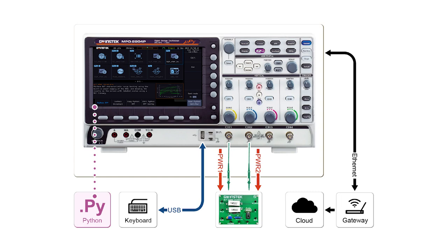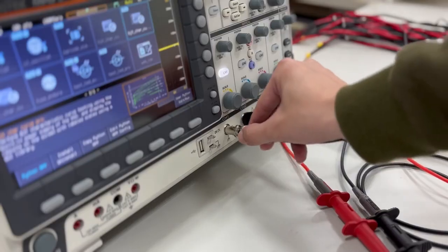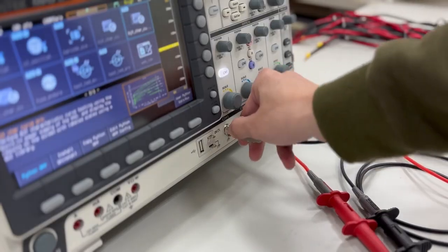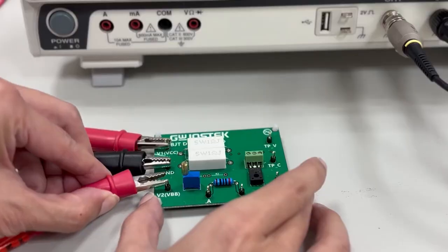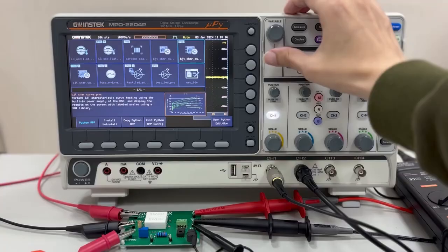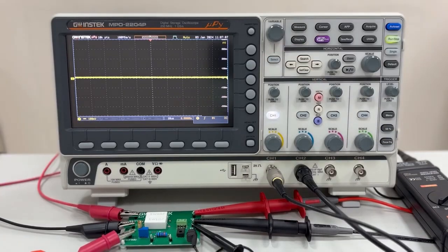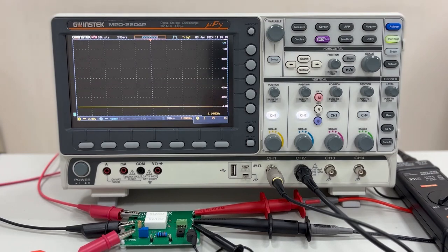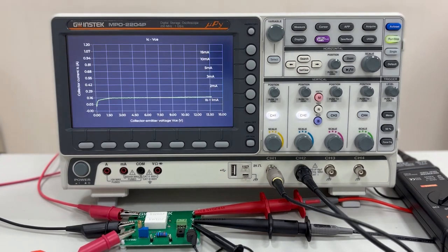MPO-2000 comes equipped with various measurement instruments, making it particularly suitable for educational applications. Controlled by Python scripts, it can accomplish functions that were previously challenging for standalone devices. The ability to run Python scripts directly on the machine is especially advantageous for engineers and makers to unleash their creativity in various measurement applications.